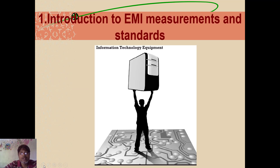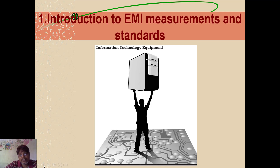First we'll see what electromagnetic measurements and standards are. We've already discussed the different standards like civilian standards, military standards, FCC standards, American standards, and IEEE standards. There are so many standards for low frequency and high frequency equipment — covering how much it radiates as well as how it performs in an electromagnetic environment. This is a recap of what we learned in the beginning chapters.